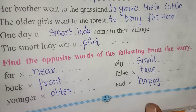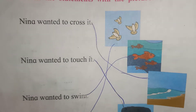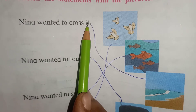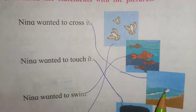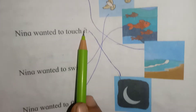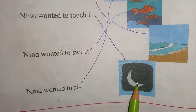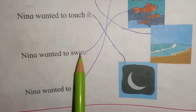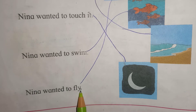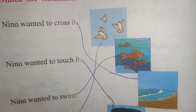Coming on to page number 40, children, we will see the next question. We will do the match the following. Neena wanted to cross it — match with this picture. Neena wanted to touch it — match with this moon. Neena wanted to swim — match with this. Neena wanted to fly — match with this.